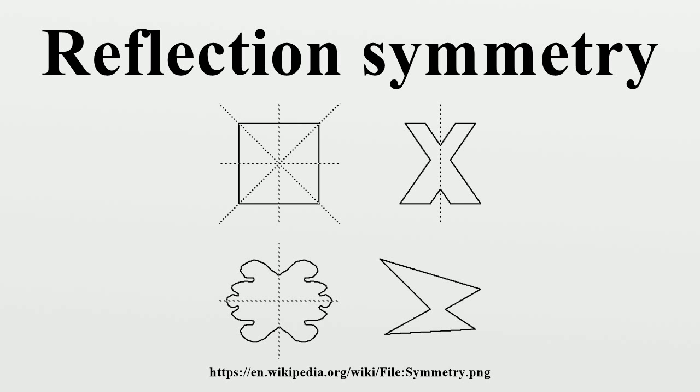Two objects are symmetric to each other with respect to a given group of operations if one is obtained from the other by some of the operations. The symmetric function of a two-dimensional figure is a line such that,